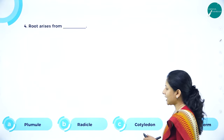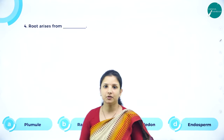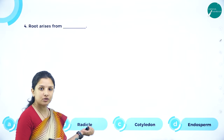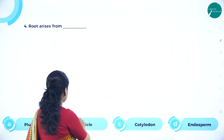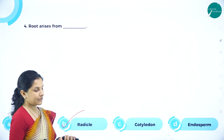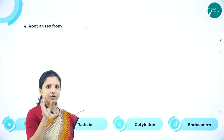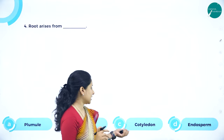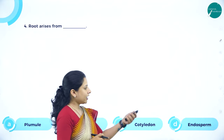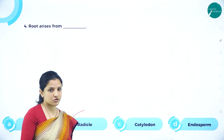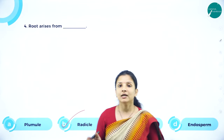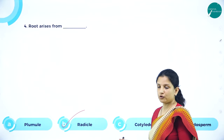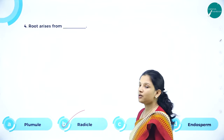Next MCQ: Root arises from dash — plumule, radicle, cotyledon, or endosperm? All are parts of the seed. Plumule gives rise to the shoot. Root arises from the radicle, so option B is the right answer. Cotyledon contains the endosperm and embryo. Endosperm is the nutritive tissue present in the seed and has nothing to do with the development of the root.